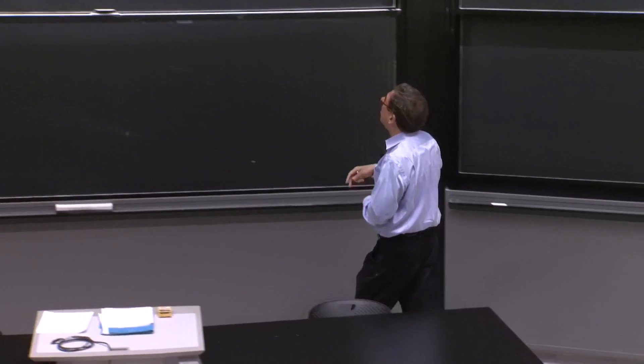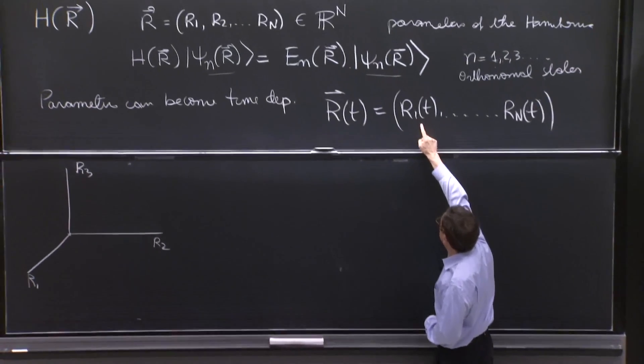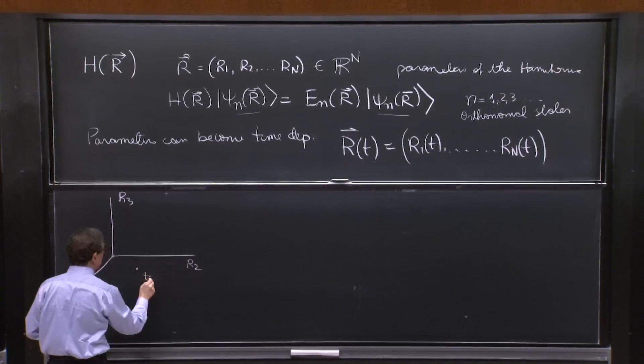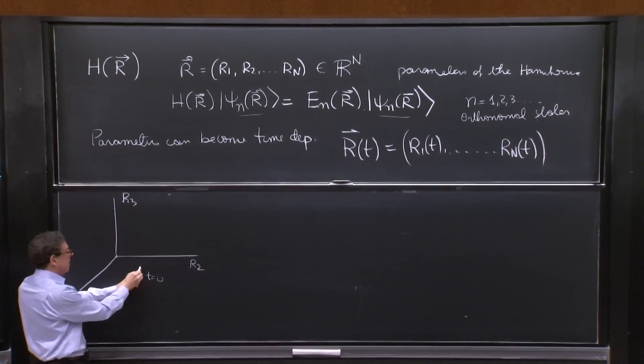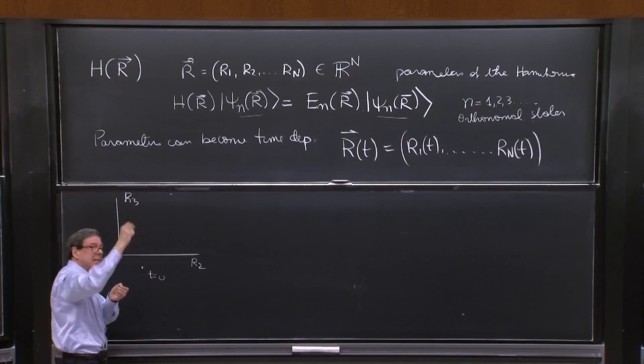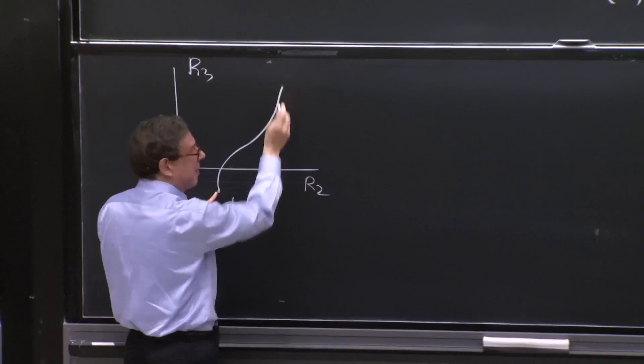It's a path. It's a line. Indeed, you look at your clock. And at time equals 0, well, it takes some values. And you find, OK, here it is at time equals 0. At time equals 1, the values change. There's one parameter, which is time. So this traces a path.